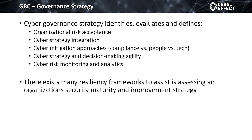The strategy is to identify and evaluate key things the organization must account for. First is organizational risk acceptance — how does the organization manage, accept, or mitigate risk? What do they do when presented with a risky situation or when they want to conduct a line of business that poses an inherent risk? They need a policy and a matrix for determining how they respond to that risk.